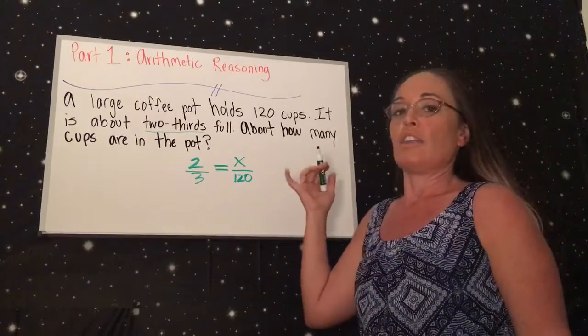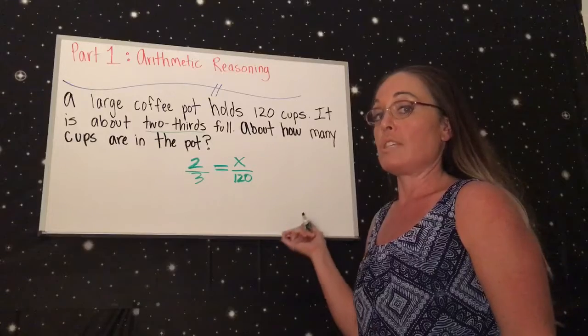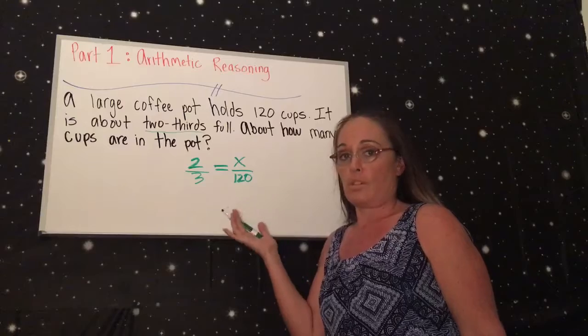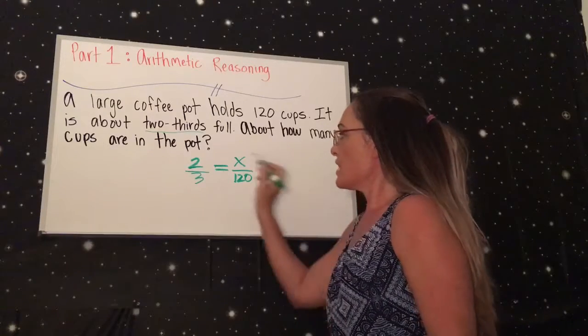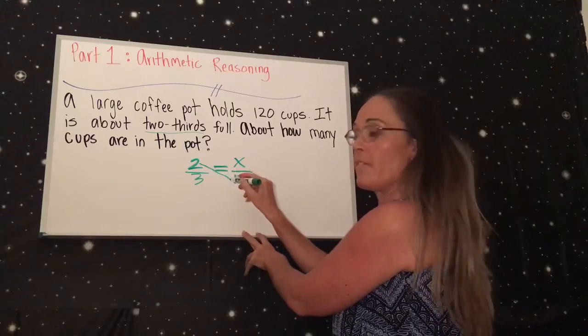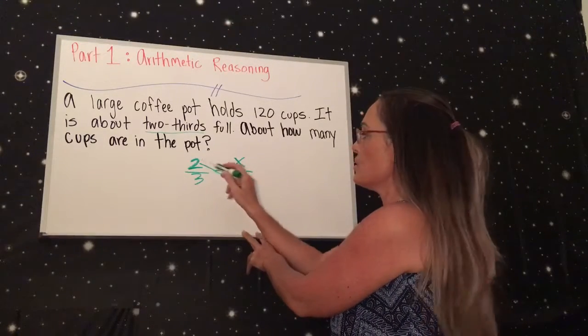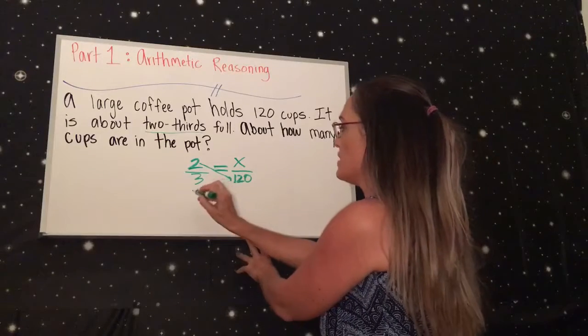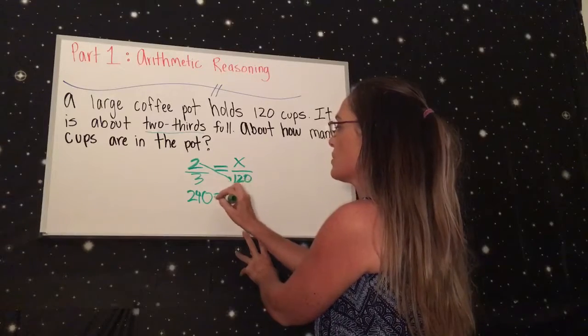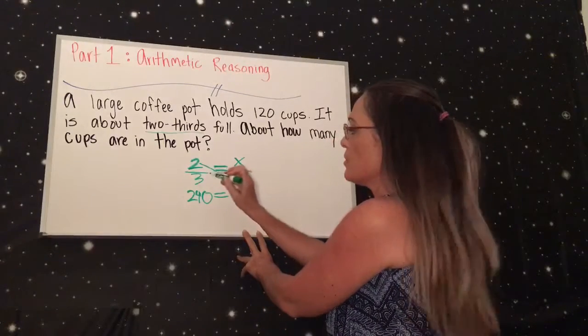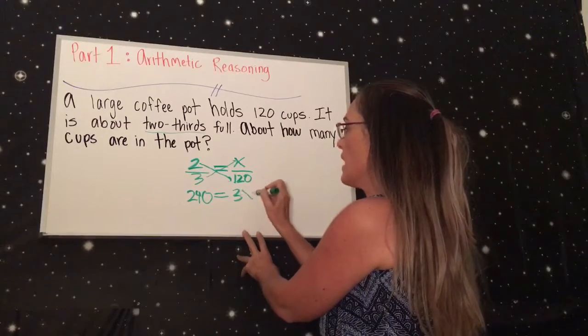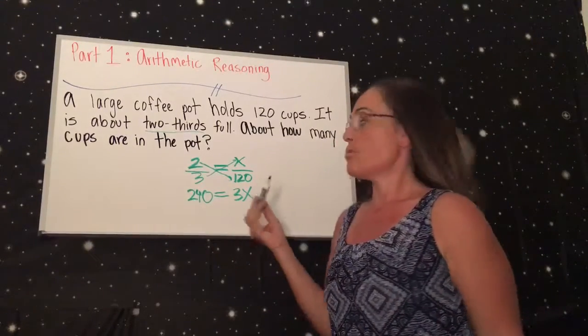This is called cross multiplying. As you read word problems, you'll see that most of the problems can be solved with cross multiplying. So now let's cross multiply. First we're gonna take the top and we're gonna go to the bottom of the other fraction and times it. So 2 times 120 is 240, and we're still gonna use the equal sign. That is equal to the bottom times the second top, which is 3X.